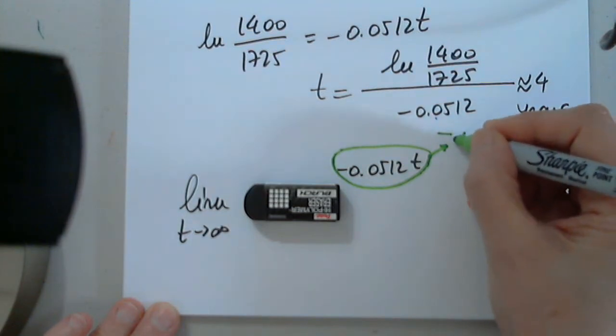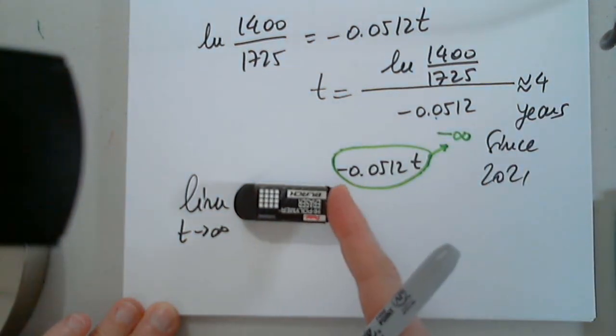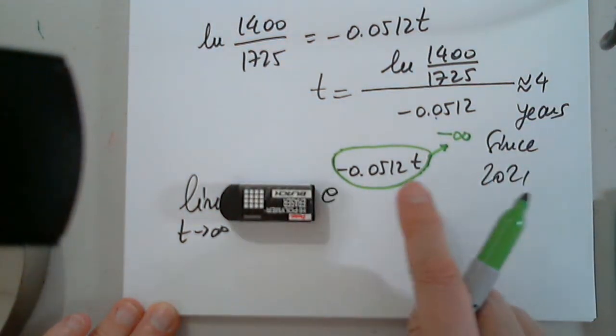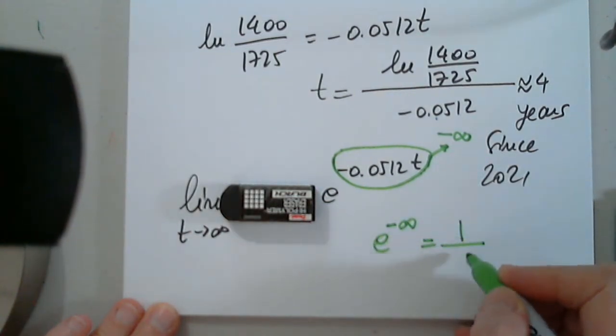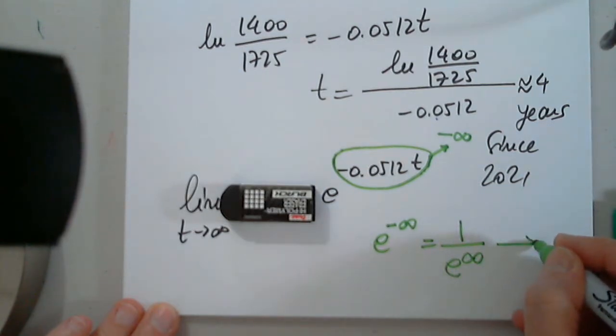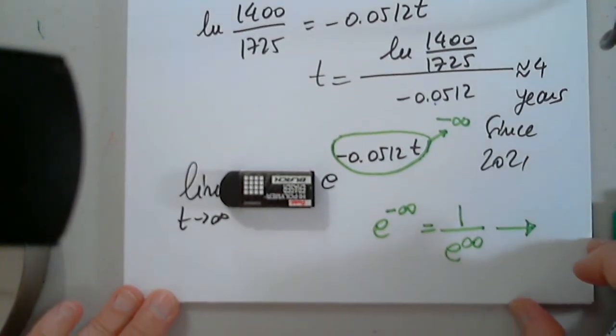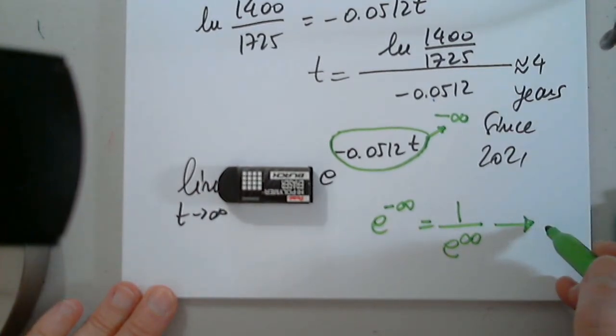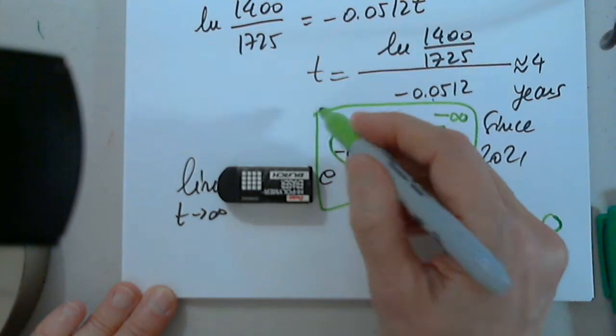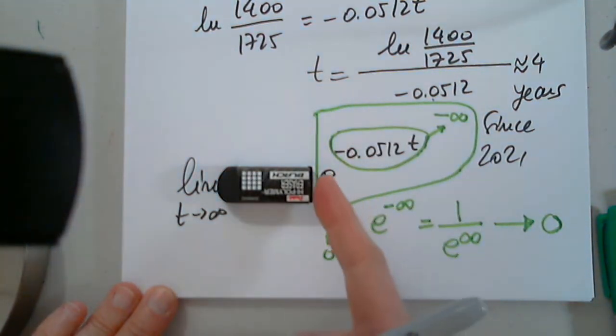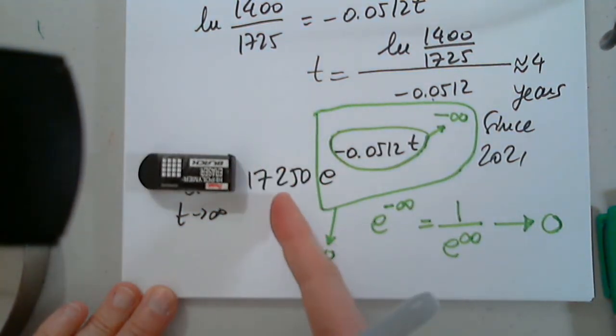Minus infinity. Very good. Now e to negative infinity, remember, e to negative infinity is the same as 1 over e to infinity. Where will this go? Close to 0. Very good.